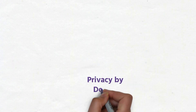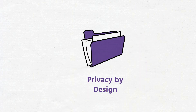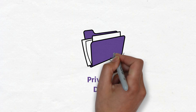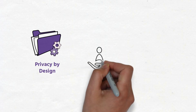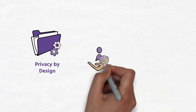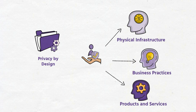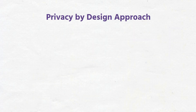Privacy by Design. An important method of protecting data privacy is through the Privacy by Design approach. This approach, pioneered by a member of our Board of Advisors, ensures protection for the privacy of individuals by integrating considerations of privacy issues from the very beginning of the development of products, services, business practices, and physical infrastructure. You literally build privacy into the design of your business.